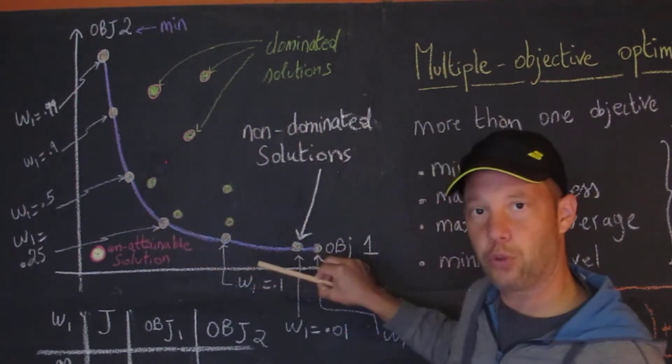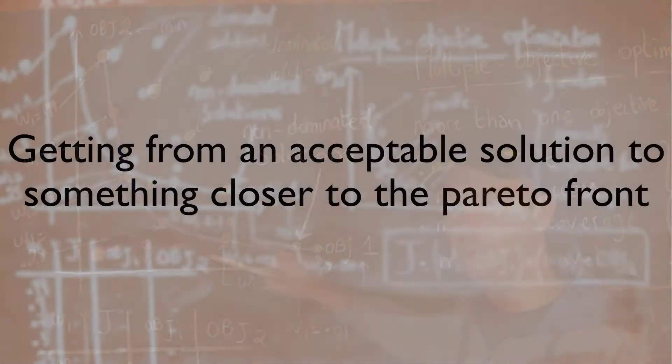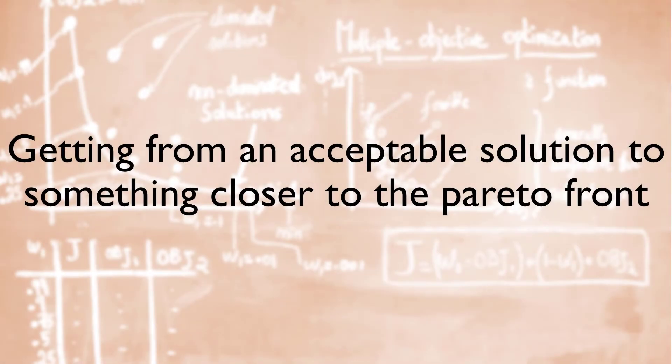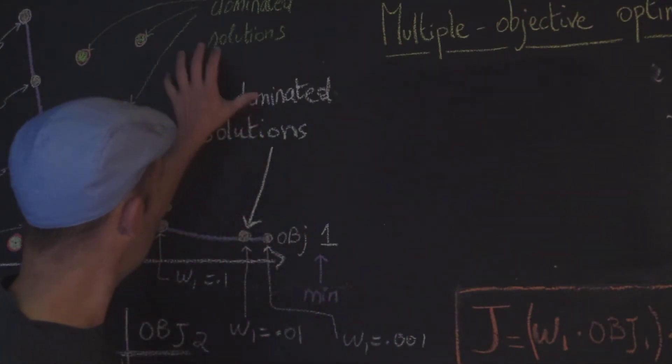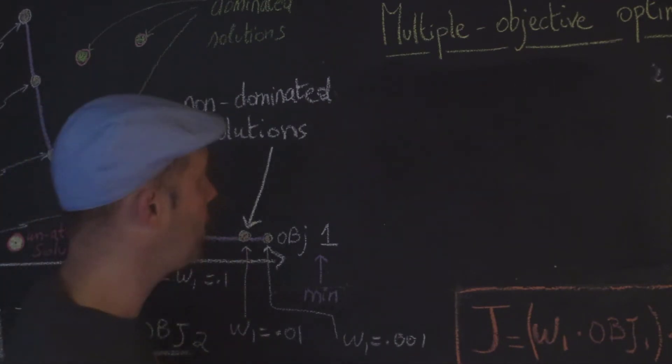What I want to show is exactly how do we get from dominated solutions to solutions that are very close to the Pareto front. So let's go back and look at this graph.